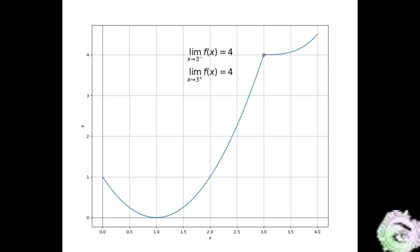Because the right and left limits are both defined and equal to 4, the two-sided limit is also defined and equal to the common value 4, which we represent in symbols as lim as x approaches 3 of f of x equals 4.